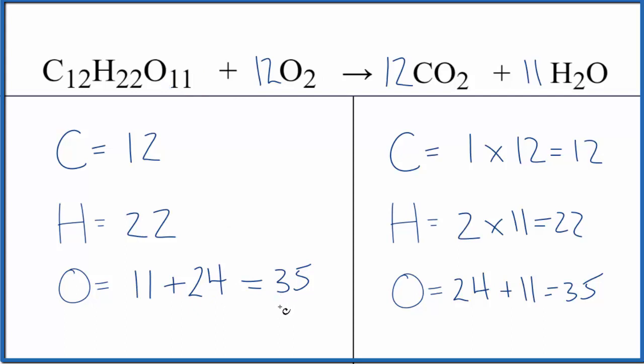This equation is balanced. So kind of a tricky equation to balance, but it's helpful to think 11 plus some number would give us the 35 to balance these. Because with the oxygen, then we can change that, and it won't change the carbons or hydrogens.